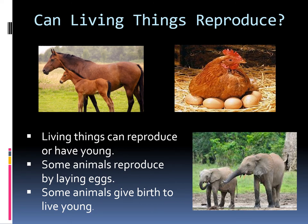The next slide is related to: can living things reproduce? Reproduce means giving birth to young ones. Look at the picture — you can see a horse and its foal. In the next picture you can see a hen and its egg, from which chicks hatch. The last example is an elephant and its baby elephant.